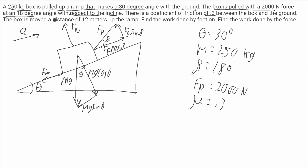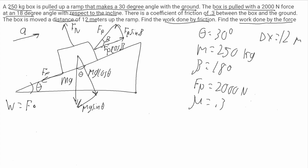The box is moved a distance of 12 meters up the ramp, so delta x equals 12 meters. We want to find the work done by friction as well as the work done by the pulling force. Work is equal to force dot product delta x, where delta x is the displacement. I'll start with the work of friction: Wf equals Ff dot delta x.